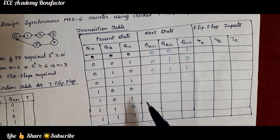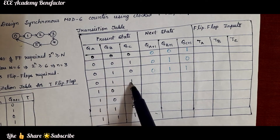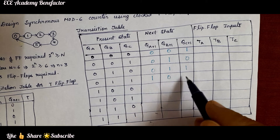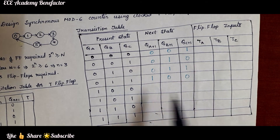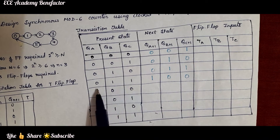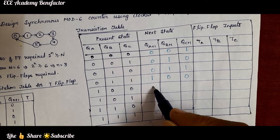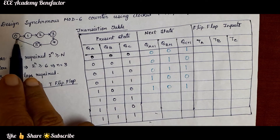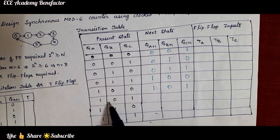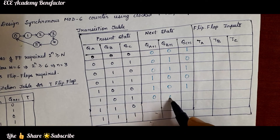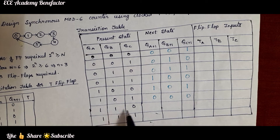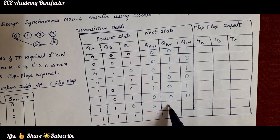After 3 is 4, written as 100. After 4 is 5, written as 101. After 5 it goes back to 0, so next state is 000. States 6 (110) and 7 (111) are not part of the mod six sequence, so we put them as don't care in the next state column.